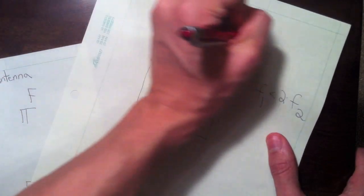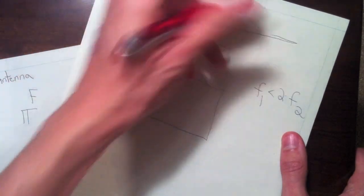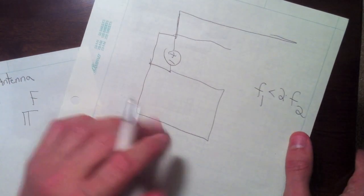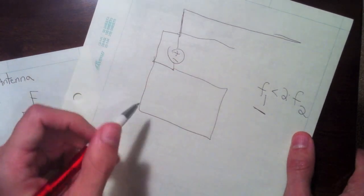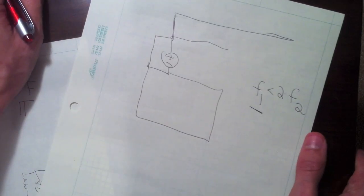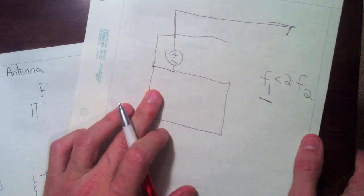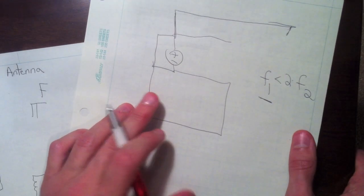We kind of add another longer arm. The longer arm represents the lower resonant frequency. The shorter arm is going to give rise to the higher frequency. So this structure here would represent a dual band IFA.